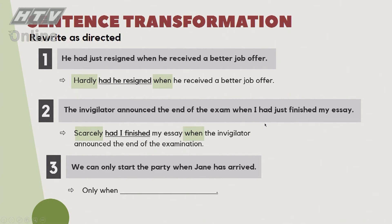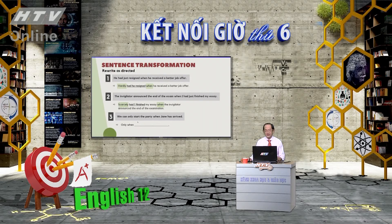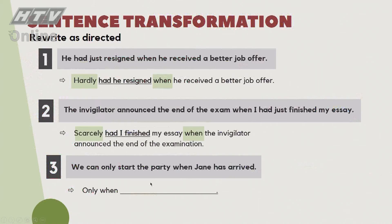Câu số 3: 'We can only start the party when Jen has arrived.' Câu này có 'only' và 'when', nên viết lại với 'only when' đứng đầu câu. Khi 'only' đứng đầu thì có đảo ngữ - 'only when', 'only by', 'only if', v.v. Chỉ khi bạn Jen xuất hiện rồi thì mới bắt đầu buổi tiệc: 'Only when Jen has arrived can we start the party.'